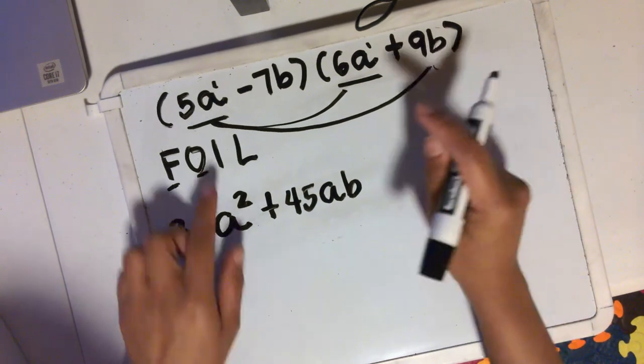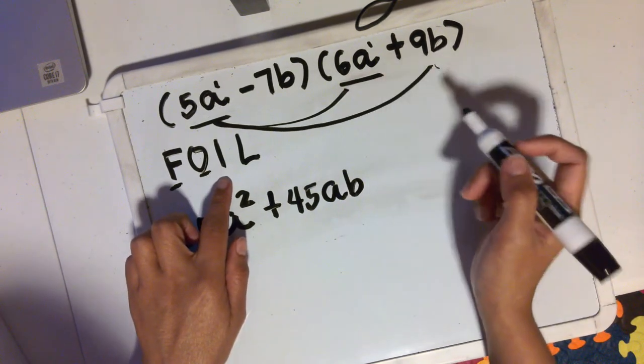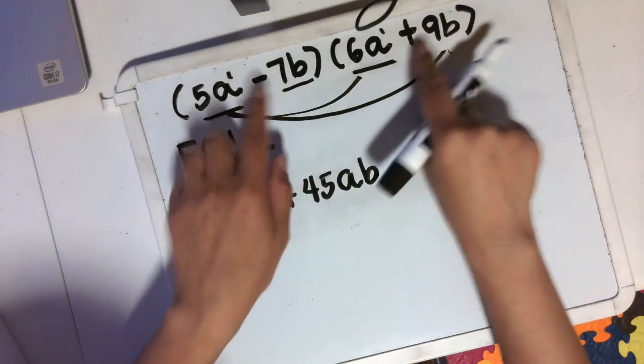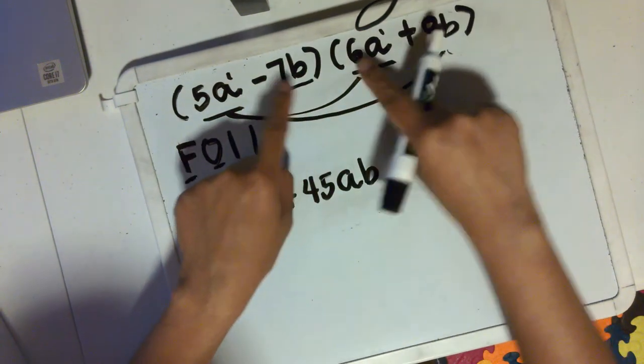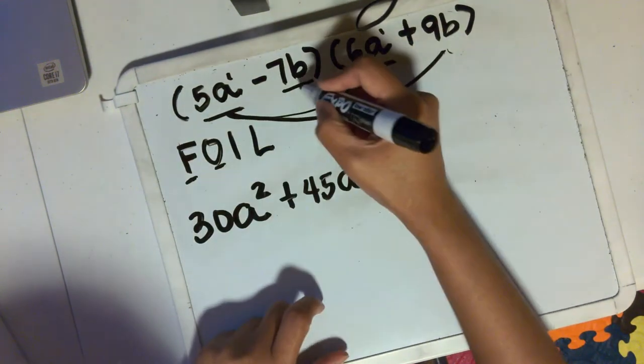Next, inner term times inner term. So this is the inner term right here. That means the terms that are inside. So inner times inner, these two.